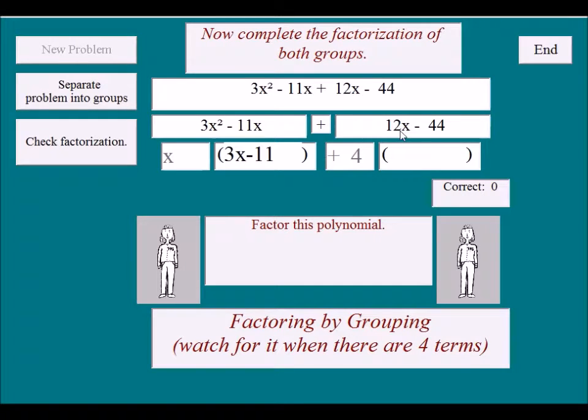Over here we want to factor out the 4. Pull a 4 out of 12, we get 3x minus 11. And double check: 4 times 3 is 12. It works.